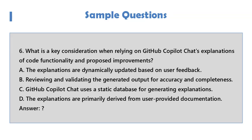Question 6: What is a key consideration when relying on GitHub Copilot Chat's explanations of code functions? A. The explanations are dynamically updated based on user feedback. B. Reviewing and validating the generated output for accuracy and completeness. C. GitHub Copilot Chat uses a static database for generating explanations. D. The explanations are primarily derived from user-provided documentation.